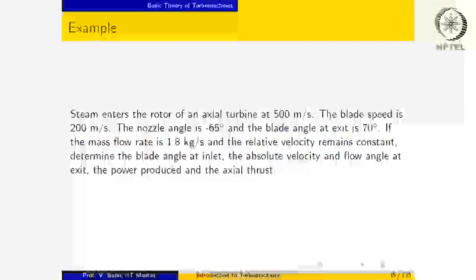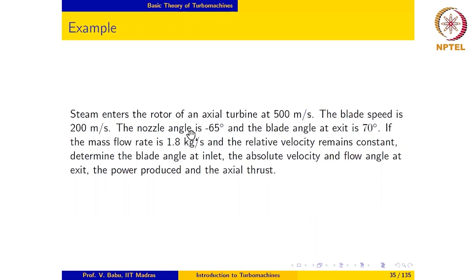The blade angle at exit is 70 degrees. Note that the nozzle angle is the angle at which the nozzle before the inlet to the rotor is oriented, and steam issues from this nozzle and enters the rotor — so essentially this is the inlet flow angle. If the mass flow rate is 1.8 kilograms per second and the relative velocity remains constant, determine the blade angle at inlet, absolute velocity and flow angle at exit, the power produced, and the axial thrust.